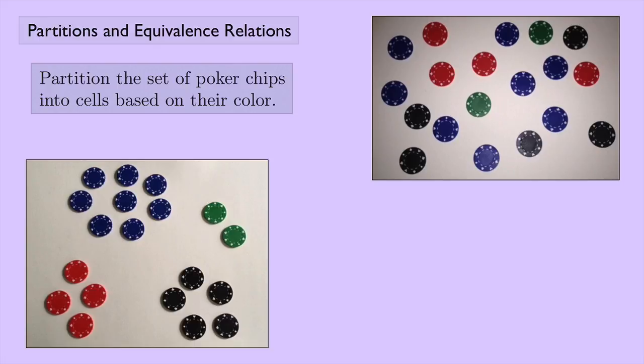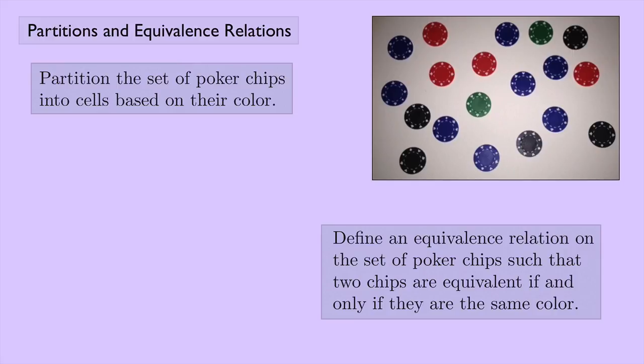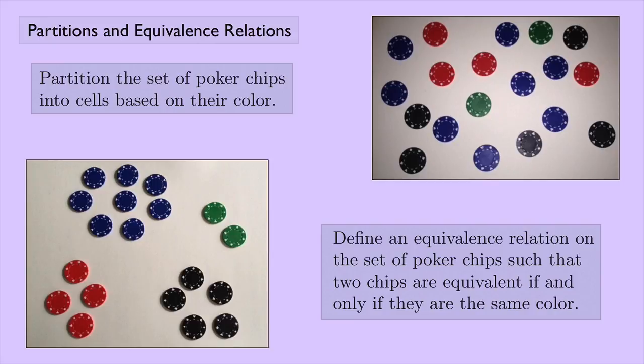Something that looks like this. Now, take the same set of poker chips and define an equivalence relation in the following way: define an equivalence relation on the set of poker chips such that two chips are equivalent if and only if they are the same color. What would you get?